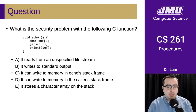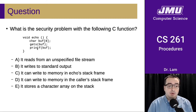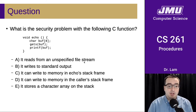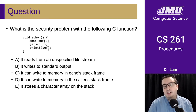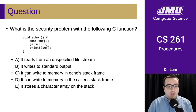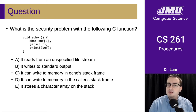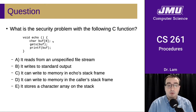Let's think about these options. Option A says it reads from an unspecified file stream - that is true, but when you have an unspecified file stream, it's usually coming in from standard in, and that's exactly how gets works. So that's not really a problem. Option B says it writes to standard output - also not really a problem, many programs write to standard output. Option E says it stores a character array on the stack - that's also not necessarily a problem; the issue comes from how we use that array.